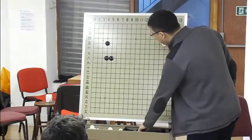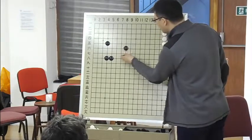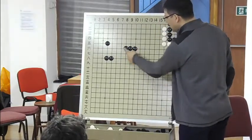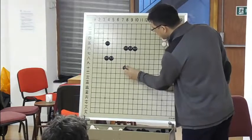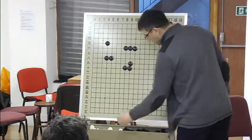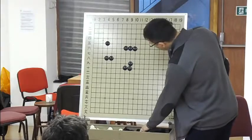One space inside is always dead. Two is also dead. From three we get different types of shapes like this. If you capture three stones like this, the group will die. This is also dead shape.